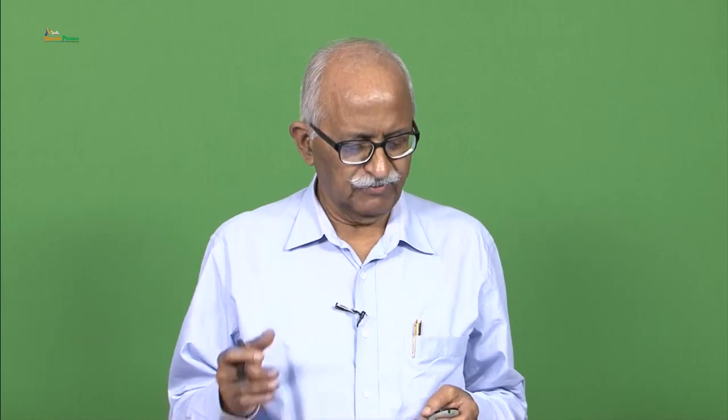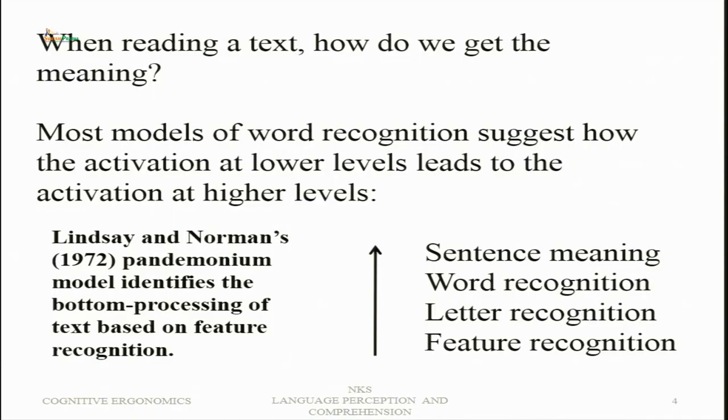One of the initial models was called the pandemonium model. It suggested that when text is written, there are certain daemons which extract features from the written text — for each feature there is a daemon. Depending upon the intensity or relevance of a particular feature in the text, that daemon shouts louder. There are also cognitive daemons and decision daemons. Most models of sentence meaning or word recognition are based on this kind of approach.